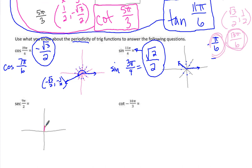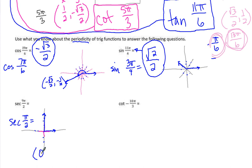For the secant at 9π/2, we're dividing by 2's — just the axes, every 90 degrees. We count 9 axes around the unit circle. 9π/2 is coterminal with π/2. The coordinate there is (0, 1), so the cosine is 0, which means the secant is going to be undefined. At 9π/2, the secant is undefined because the cosine is 0.